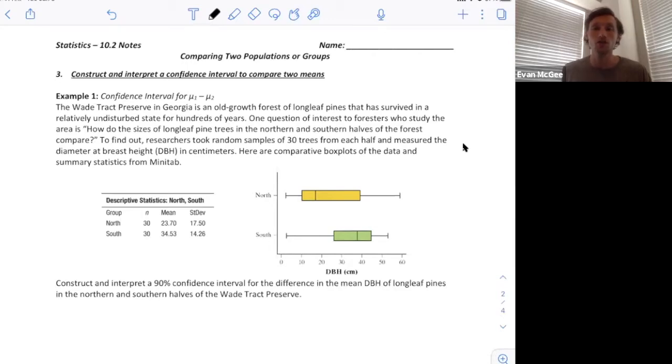To find out, researchers took a random sample of 30 trees from each half and measured the diameter at breast height (DBH) in centimeters. Here are comparative box plots of the data and summary statistics from Minitab. We want to construct and interpret a 90% confidence interval for the difference in mean DBH of longleaf pines in the northern and southern halves of the Wade Track Reserve.